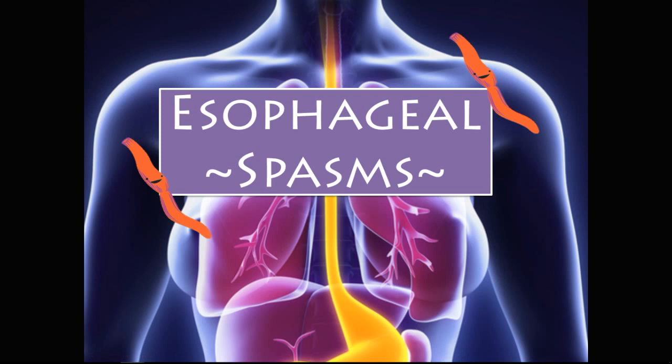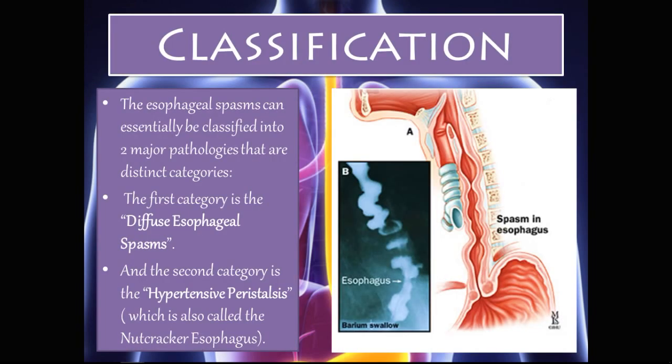Welcome to Hadegastril. In today's presentation we will be covering esophageal spasms, which is the final presentation on all the esophageal pathologies. The esophageal spasms can be classified into two major distinct categories: the first is diffuse esophageal spasms, and the second is hypertensive peristalsis, also called the nutcracker esophagus.